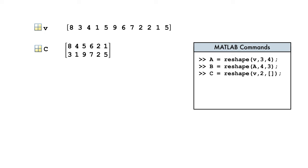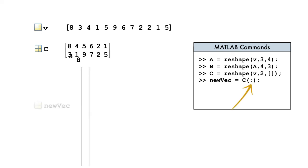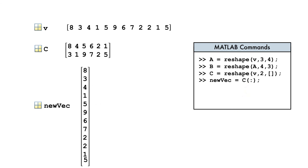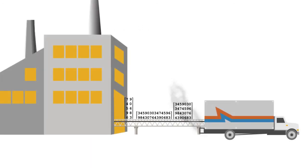Let's look at one last example. Reshaping an array of any size to a single vector is such a common task that there's a shortcut: we use a colon enclosed in parentheses to create a single vector from the columns of C. Now you can organize your own data as you like.